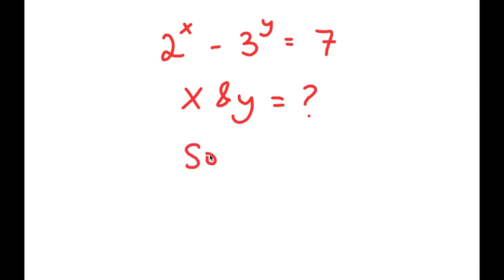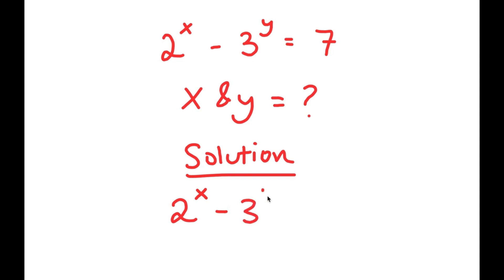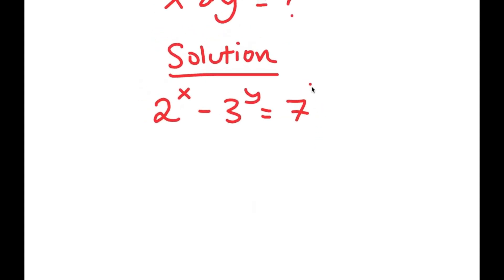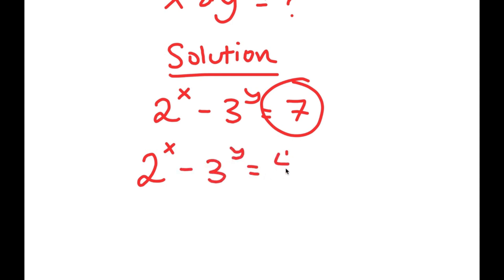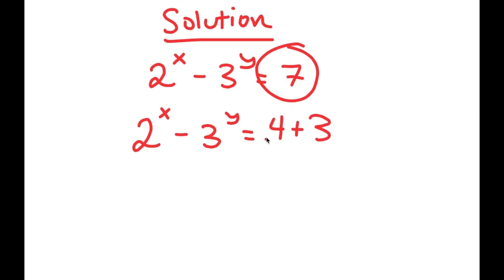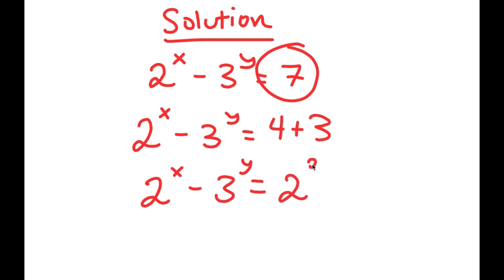For my solution, if I have 2 to the power of x minus 3 to the power of y equal to 7, I'm going to rewrite 7 as 4 plus 3. So now I have 2 to the power of x minus 3 to the power of y is equal to 4 plus 3. The reason I did this is because 4 is the same thing as 2 squared, so now I get 2 squared plus 3.